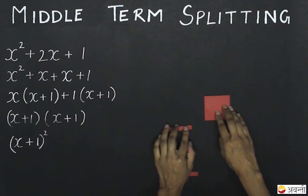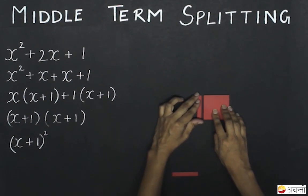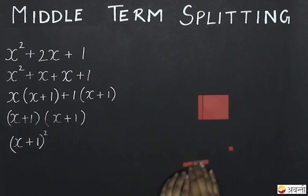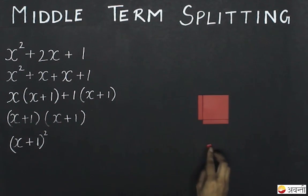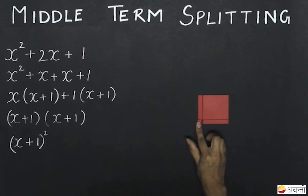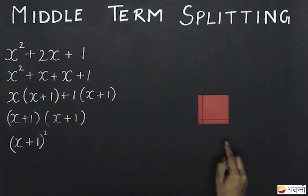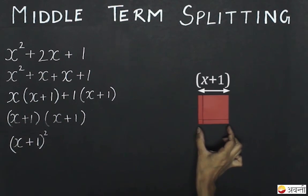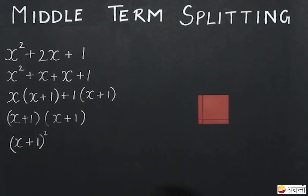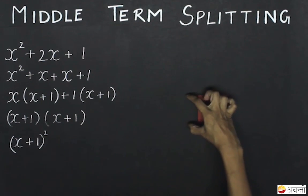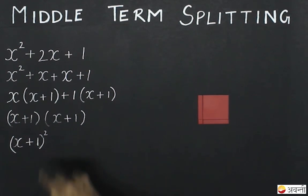If I place one strip along this side of the square and the other strip along this side of the square, and place the one unit square in the corner, then what do I get? I get another square of side x plus 1, and the area of this square is simply x plus 1 whole square.